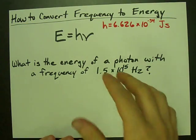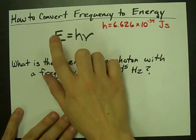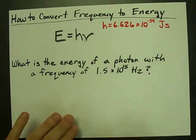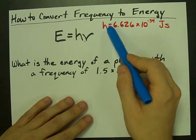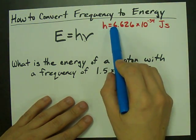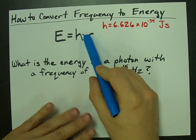The way that you do this is to calculate it with a formula: E equals H times nu, where H is Planck's constant. Nu here is the frequency.